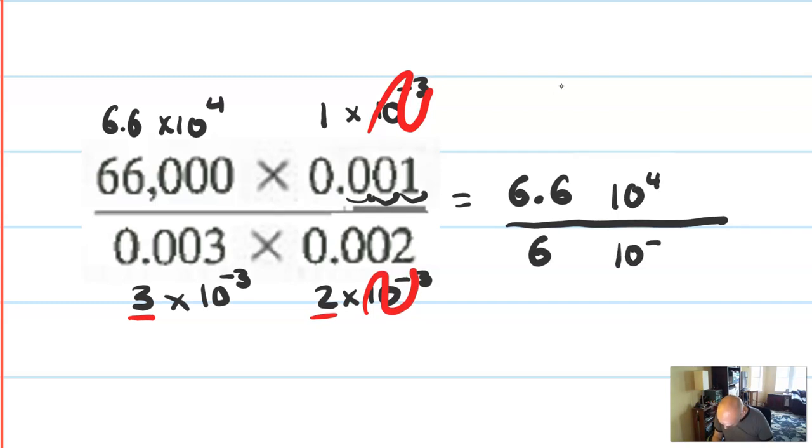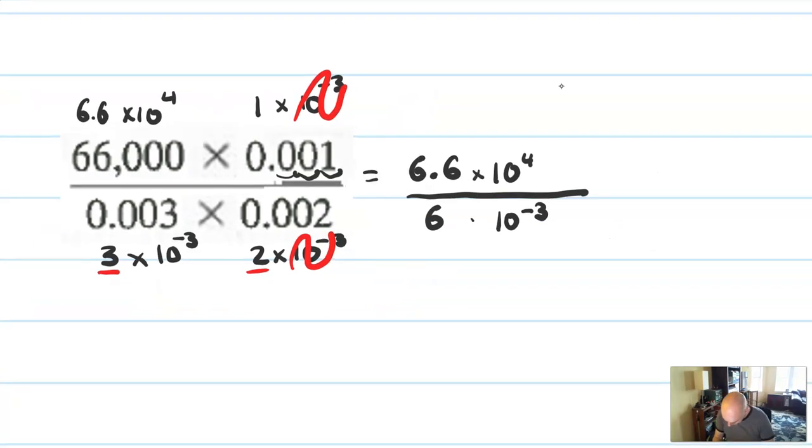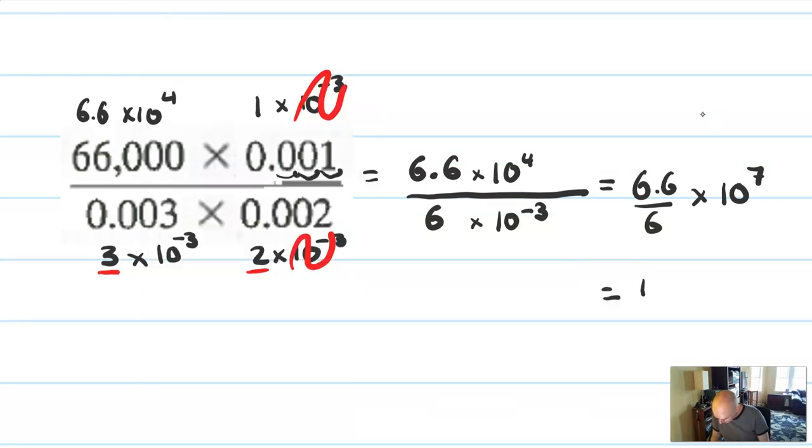And I have a 10 to the minus 3. Just writing out an extra step. You don't need it here. And then that's going to be 6.6 over 6 times 10 to the 7th. And that does reduce more. And I just wanted to show you how much of a fool I am to need a calculator to reduce that. But that reduces to 1.1. And so you can stop there with this one.